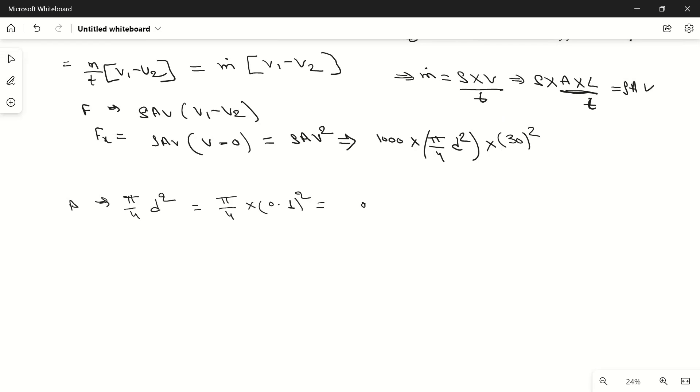And 30 to the square is 30 into 30 equals 900. So we can put in the values. So F will be 1000 into 0.007854 into 900. If you multiply all these values then you will find 7068 Newtons. So this is the value of force exerted by this jet on this plate.